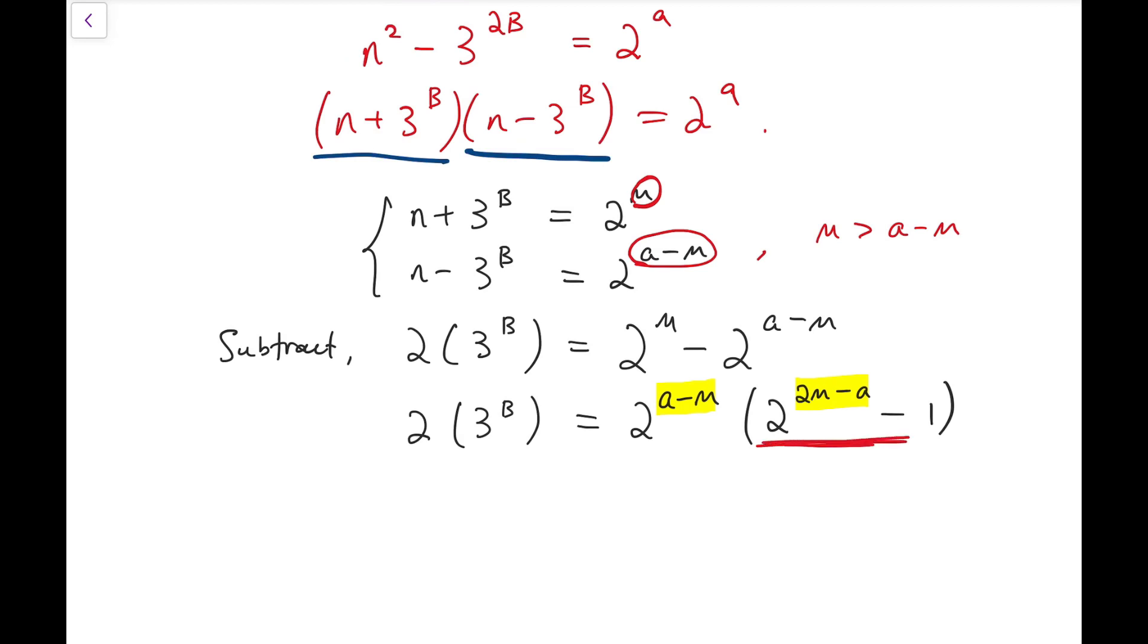Now, from this, we know that the things underlined in red are odd numbers or the parts that are not underlined are even numbers and in particular powers of 2. So that means